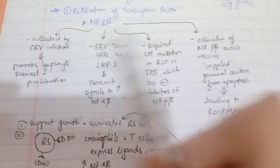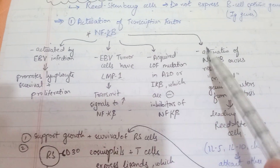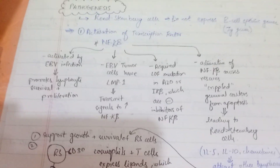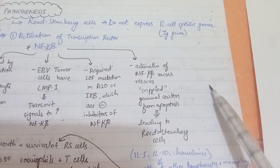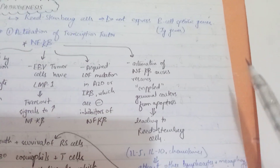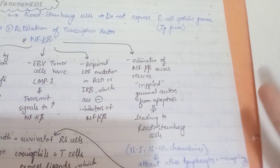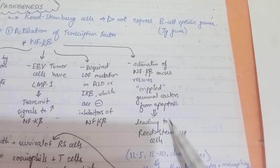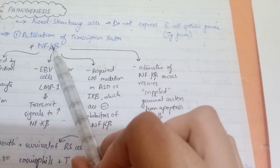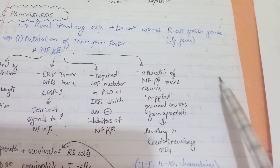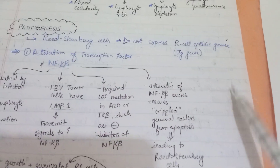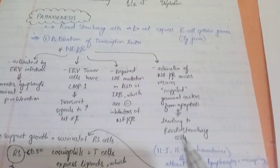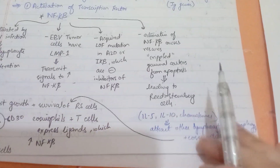When NF-κB is activated, it rescues crippled germinal centers from apoptosis. In lymph nodes, certain germinal centers that are not functioning properly — producing B cells that don't express B cell specific genes — should normally undergo apoptosis. But when NF-κB is activated, it stops that apoptosis, so those germinal centers survive and in turn produce Reed-Sternberg cells inside the lymph nodes.